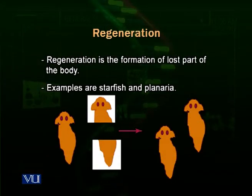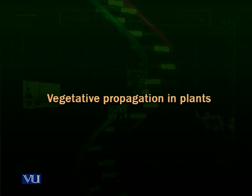In planaria, when the organism is cut into two pieces, both halves have regenerative capability. Both halves will make their other half by simple mitosis, as shown in the diagram — if a planarian is divided into two halves from the center, both halves will regenerate their missing part and produce two new organisms, one from the anterior half and one from the posterior half. In this way, regeneration also functions as a method of asexual reproduction through simple cell division.